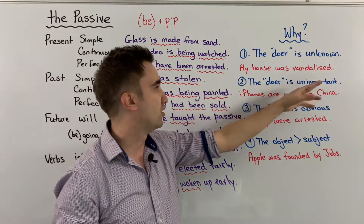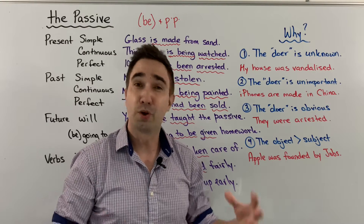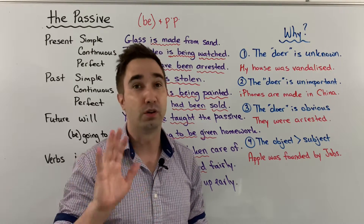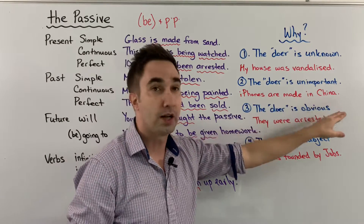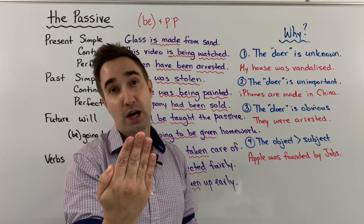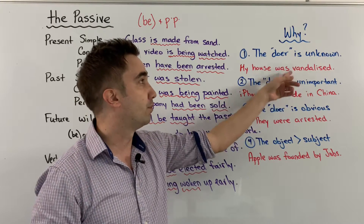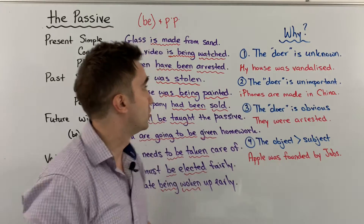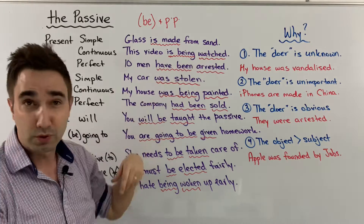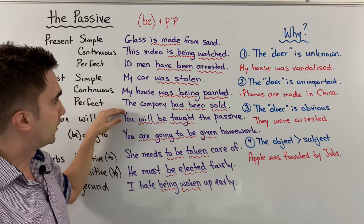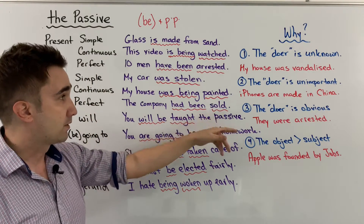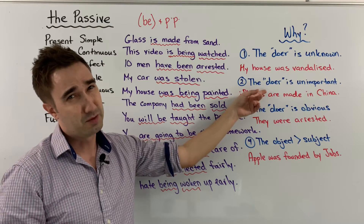Reason two: the doer is not important. I don't mean the person isn't important — I just mean it's not important that we know who did the action. For example: iPhones are made in China. Of course the factory workers are very important, but if I look at my iPhone it says 'made in China.' Either it's unknown or unimportant — these rules are very similar. Glass is made from sand — who makes the glass? I don't really care, not important. The company had been sold — who sold it is not important.